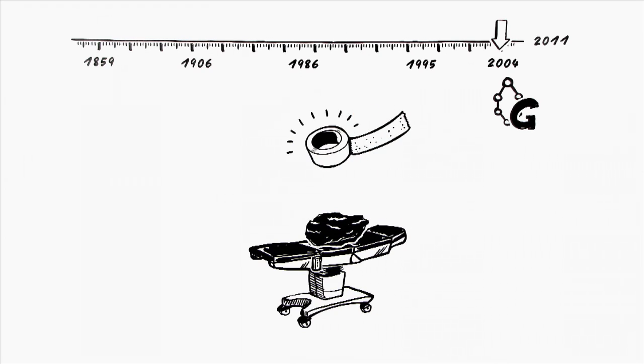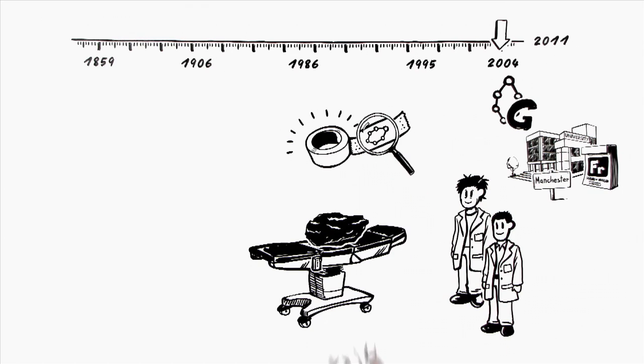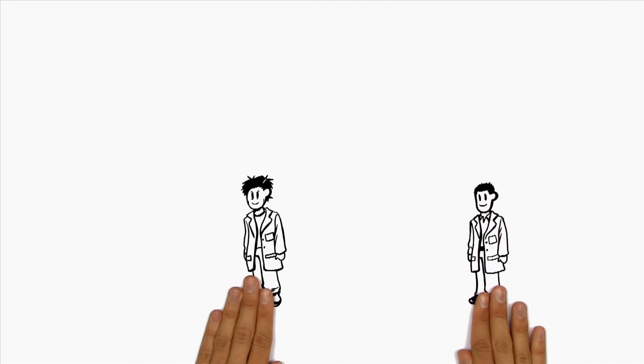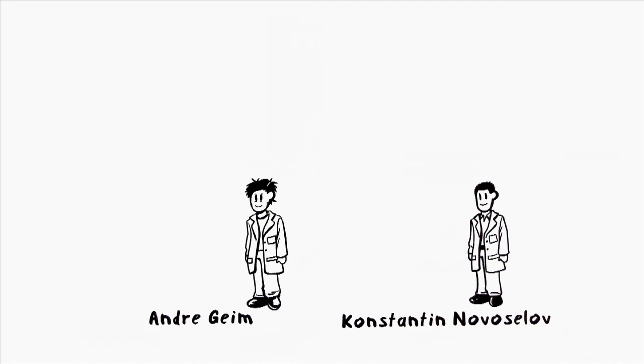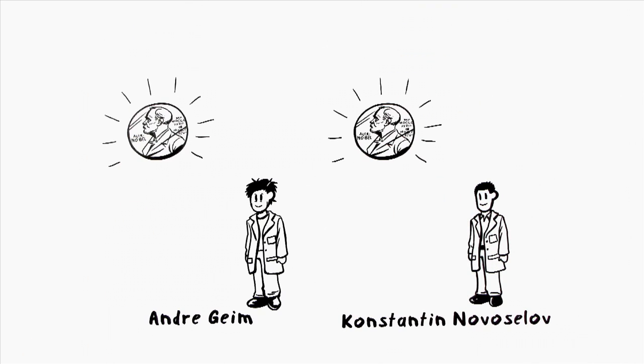During Friday evening experiments in Manchester, scientists noticed small parts of graphene on the tape used to clean a graphite stone. The two scientists, Andrei Geim and Konstantin Novoselov, were awarded the Nobel Prize in Physics 2010 for this simple but groundbreaking experiment.